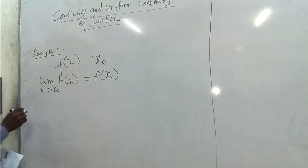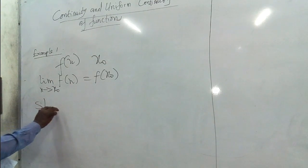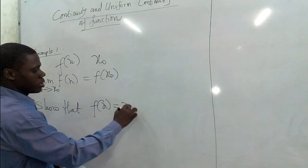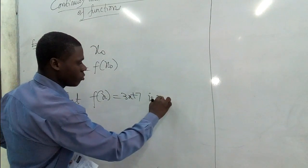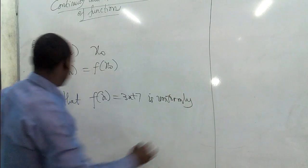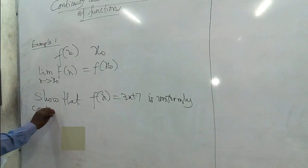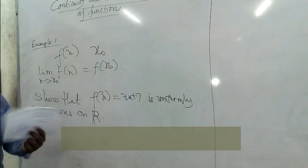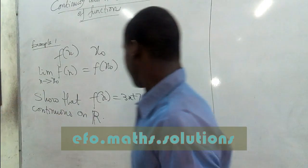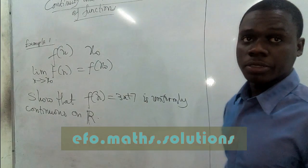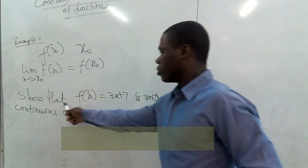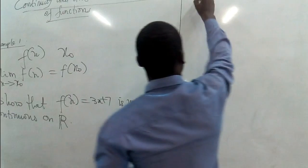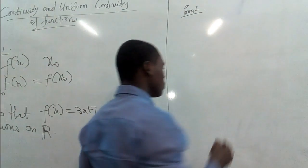Let's pick an example of this here. Let's write example one. We are showing that the function f(x) = 3x + 7 is uniformly continuous on the set of real numbers. So let's see how we do that. We are proving that the function is true.